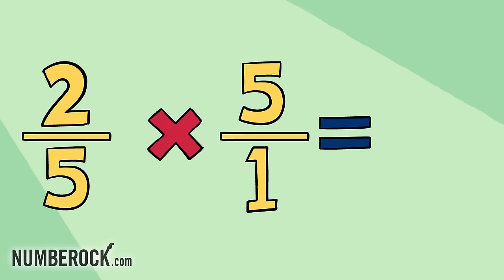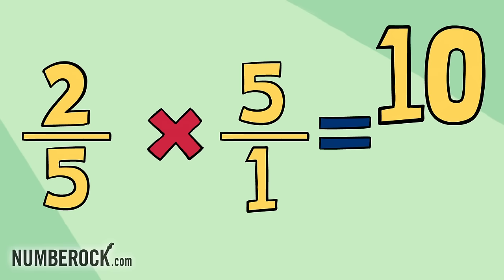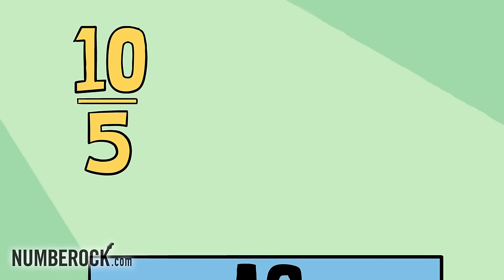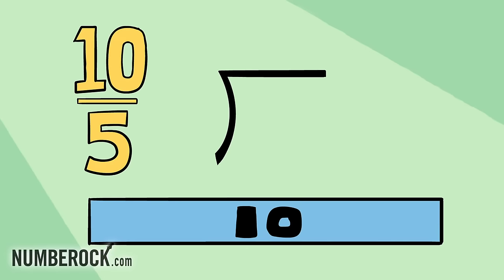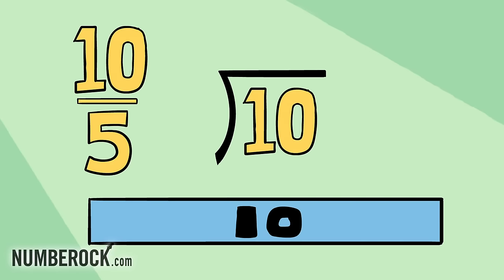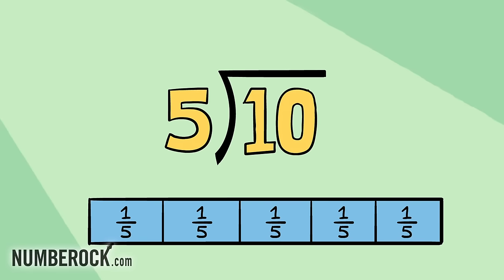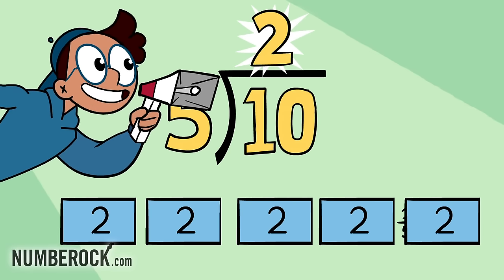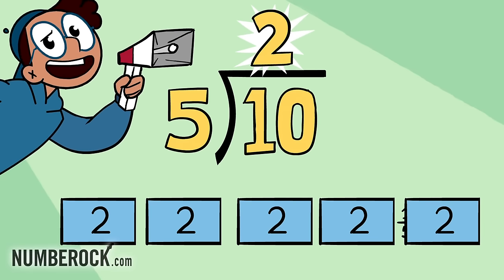Two times five is ten and five times one is five. It's an improper fraction, so you need to divide. Ten divided by five equals two. When we divide by fractions, this is what we do.